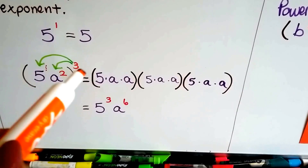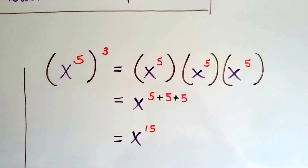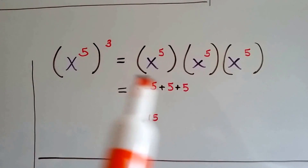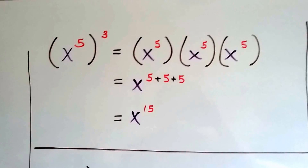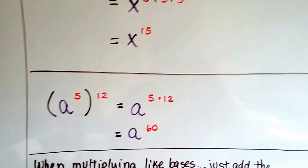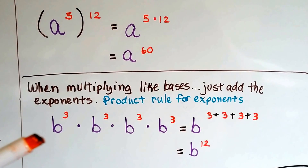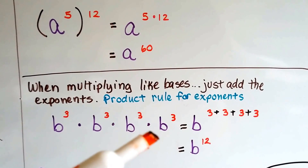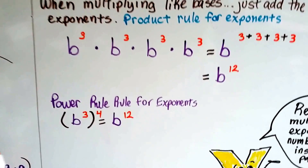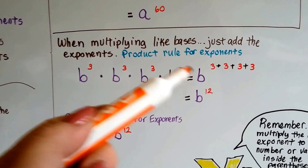All we had to do is distribute the exponent to each value inside — that's the shortcut. Now we've got x to the fifth power raised to the third power. It means three of these, which is the same as x to the five plus five plus five, so x to the fifteenth power. Because in multiplication we can just add the exponents. If we have a to the fifth power raised to the twelfth power, it's just a to the five times twelve, which is a to the sixtieth power — they can get pretty big. Remember, when multiplying like bases we add the exponents — that was the product rule for exponents. So b to the third raised to the fourth power gives b to the third plus third plus third plus third, and because all the b's are like bases we add the exponents and get b to the twelfth.